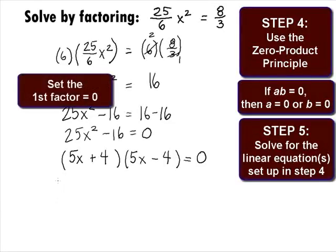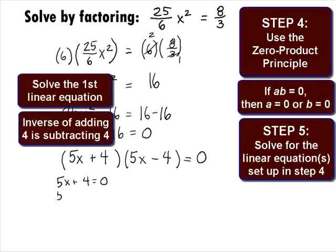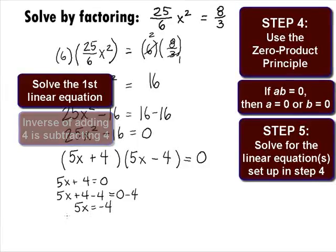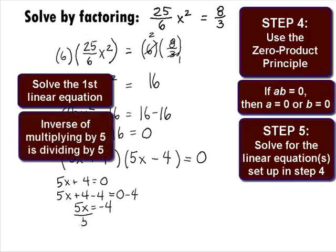Setting the first factor equal to 0, we get 5 x plus 4 equals 0. The inverse of Add 4 is to subtract 4 from both sides. That will give us 5 x plus 4 minus 4 equals 0 minus 4. This simplifies to be 5 x equals negative 4. The inverse of Multiply is to divide both sides by 5, which will give us 5 x over 5 equals negative 4 over 5, which leads us to our first solution of x equals negative 4 over 5.